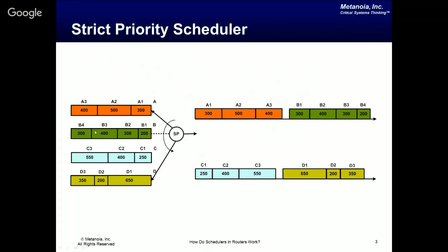The number inside each packet indicates the number of bytes in the packet. We can think of these queues as four different flows A, B, C, D, or as queues for different traffic types — voice, video, data, bulk transfers. The scheduler is denoted by a circle, with an abbreviation inside indicating the specific kind of scheduler, and an arrow indicating the order in which it serves packets from the four queues.